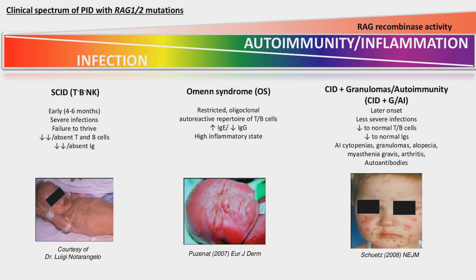One phenotype described is Omenn syndrome, where patients have restricted T and B cells that generate an auto-reactive repertoire — these patients will need bone marrow transplant or else they will die. In recent years, a phenotype called combined immune deficiency with granulomas and autoimmunity has been discovered. Unlike SCID and Omenn syndrome, this can occur in pediatric and adult patients. These patients have low-preserved RAG activity and hence low to normal T and B cells, but a wide variety of autoimmune complications including cytopenias, granulomas, alopecia, myasthenia gravis, and arthritis — which will be the focus of this presentation.